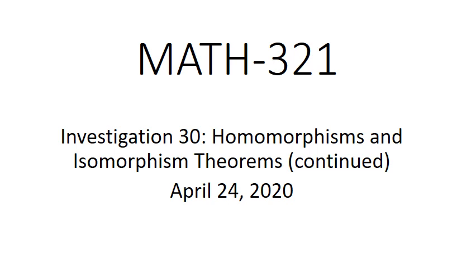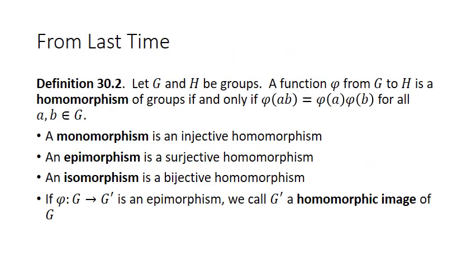Hello, everyone. Welcome to another episode of Math 321. Today we're going to continue Investigation 30, which is homomorphisms and isomorphism theorems. Here are a couple of things from last time that are going to be important today. Definition 30.2: let G and H be groups. A function phi from G to H is a homomorphism of groups if and only if phi of A times B equals phi of A times phi of B for all A, B in G. The reason they call this a homomorphism of groups is because there is also a thing called a homomorphism of rings, which is different.